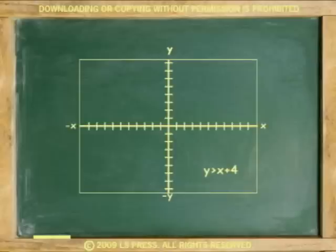For example, in graphing the inequality y is greater than x plus 4, first we plot the boundary line by recognizing that the slope of the line is 1, the coefficient of x, and the y-intercept is 4. Here is the graph.